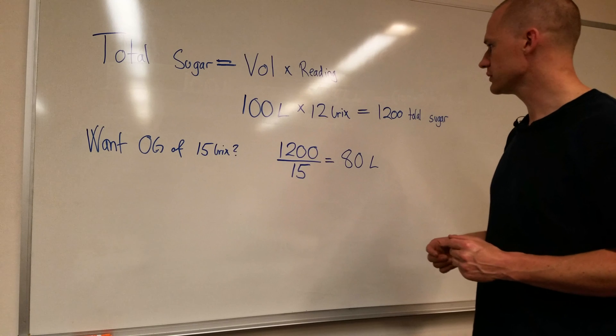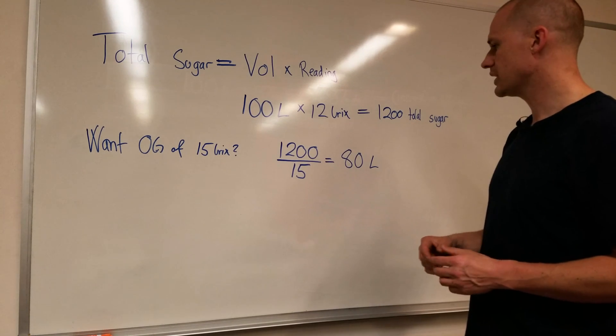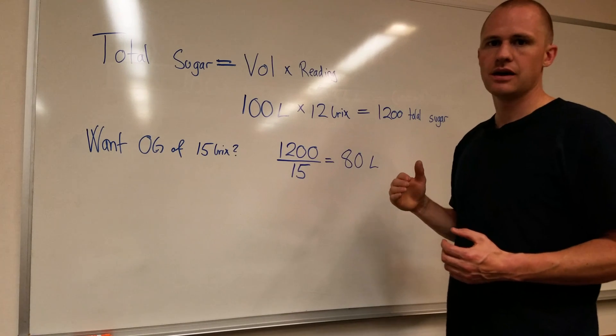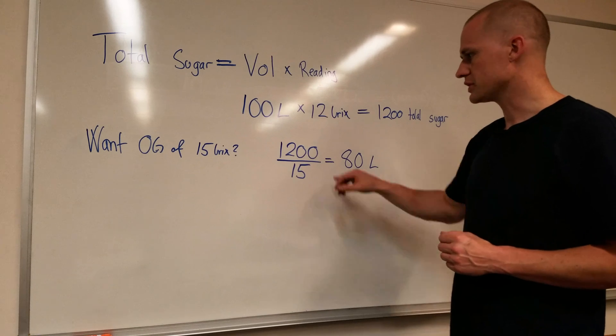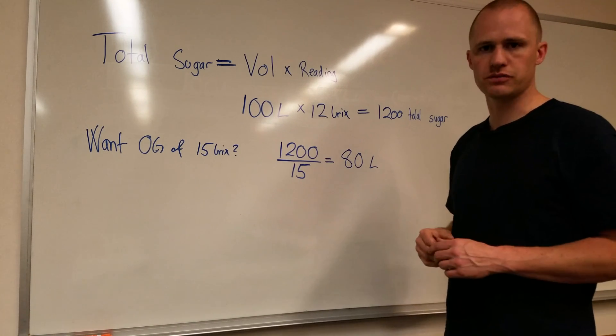And this goes a little quicker, and you can divide it other ways as well. If you divide it by 90, for example, say, I want to get down to 90, what would my bricks reading be? It would be just 1200 divided by 90, and you would end up with a certain bricks reading.